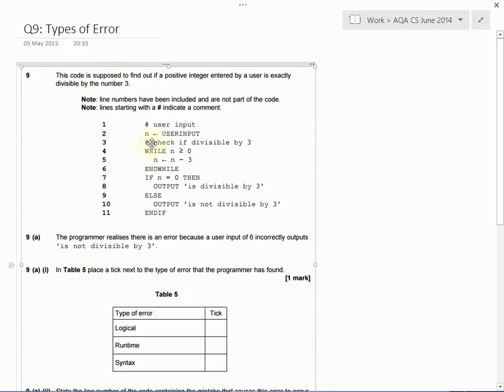If the programmer types in 6, then they're told that 6 is not divisible by 3. Well, that's wrong. 6 is divisible by 3. If you divide 6 by 3, you get 2. It goes perfectly. So it should say 6 is divisible by 3.